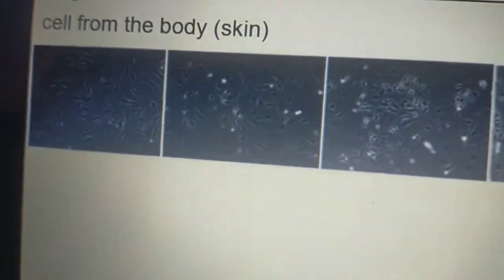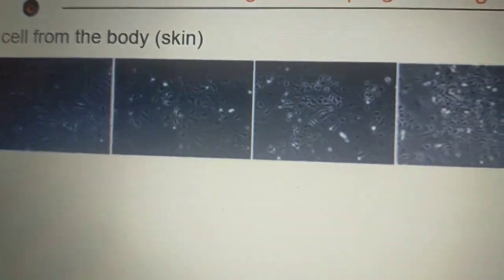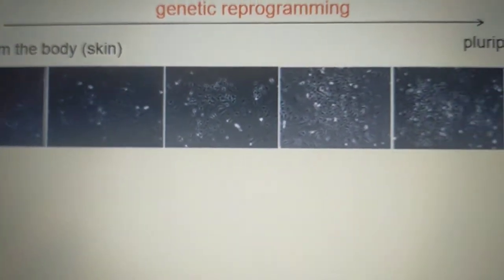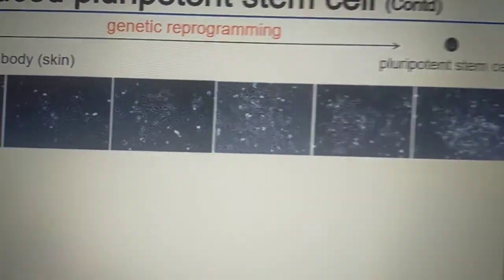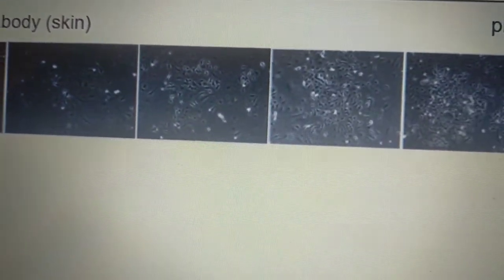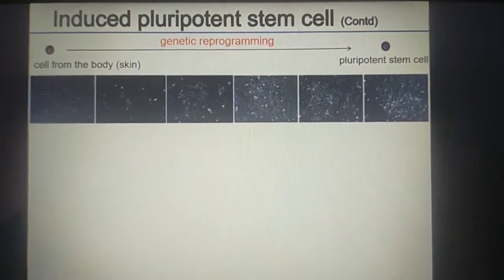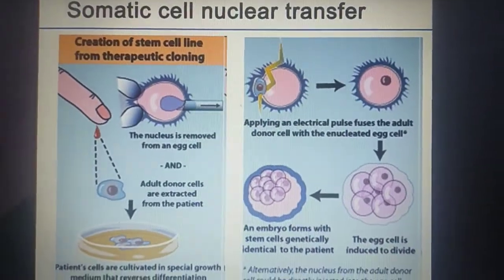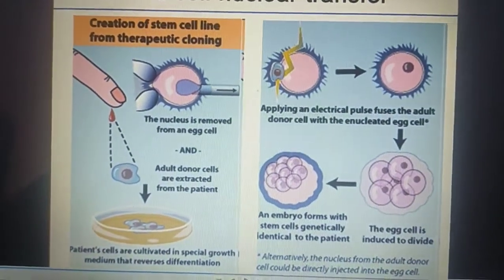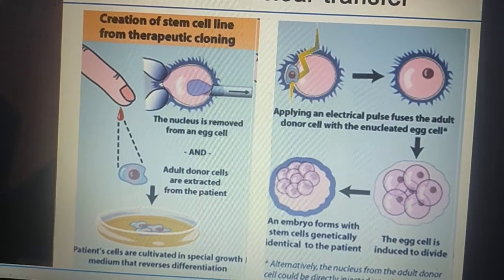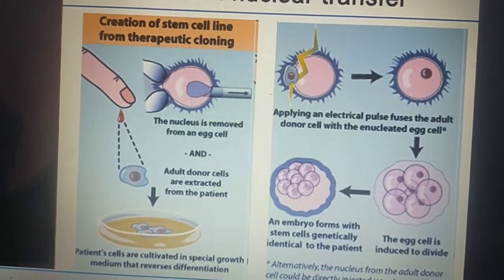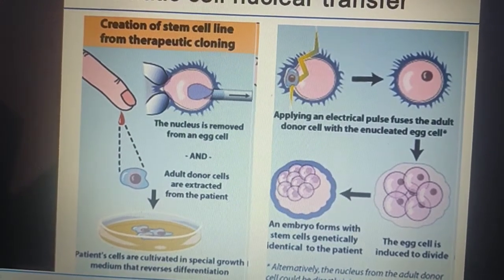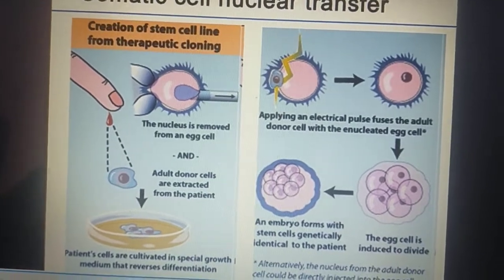Here we can see pictures of pluripotent stem cells, including mesenchymal type cells and other cell types. This next slide covers somatic cell nuclear transfer, which is the creation of a stem cell line through therapeutic cloning.